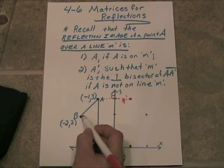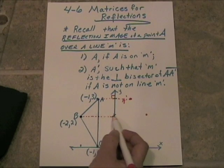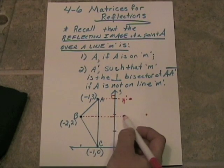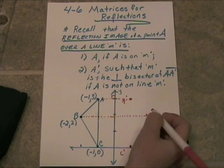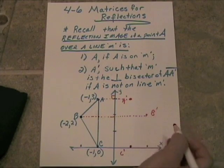Same thing is going to happen to B. It's going to have to come over here exactly the same distance, and there we'll have B prime.